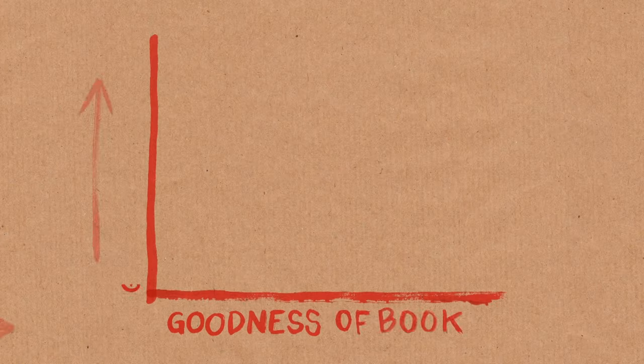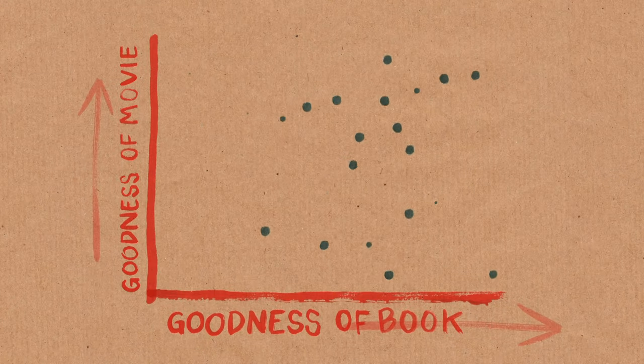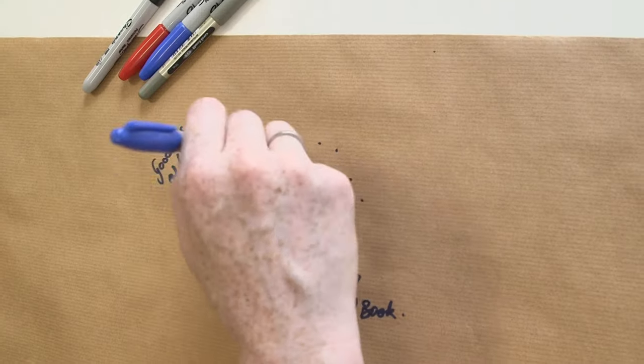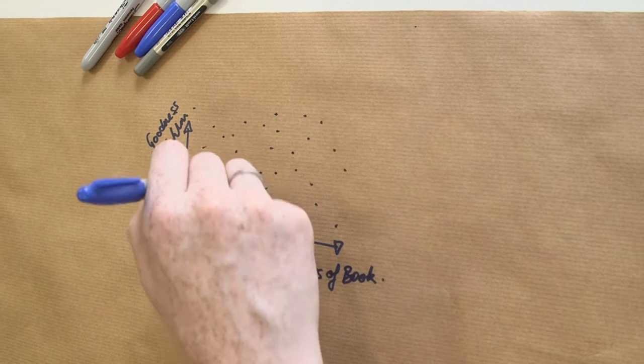But also maybe it just appears that way because of a statistical fallacy called Berkson's Paradox. Go with me on this for a second. Let's imagine that there is no connection whatsoever. Of all of the possible stories in the world, if you plotted them on this as to how good a film they make and how good a book they make,